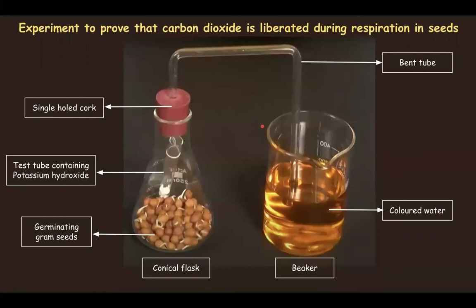The first experiment we are going to study is to prove that carbon dioxide is liberated during respiration. For this, we have taken a conical flask having germinating gram seeds, in which a test tube containing potassium hydroxide has been hung from a thread. Potassium hydroxide is a solvent for carbon dioxide — it absorbs carbon dioxide.